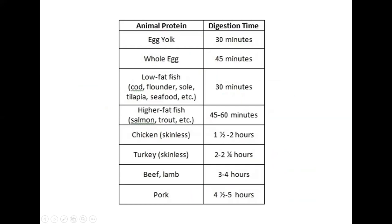Kecepatan digesti protein bervariasi: putih telur paling cepat; telur keseluruhan 45 menit; ikan rendah lemak seperti gurame atau kakap 30 menit; ikan tinggi lemak seperti salmon 45 menit sampai 1 jam; ayam 1,5-2 jam; kalkun 2,5 jam; sapi 3-4 jam; dan babi paling lama 4,5-5 jam karena lebih sulit dicerna.